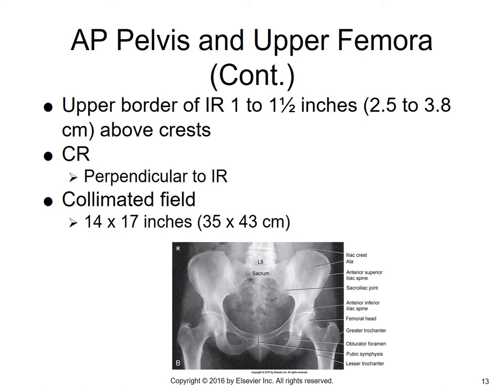If we take a look at the radiograph, we can see — identification-wise — we've got the iliac crest, the ala or wing of the ilium, ASIS, the SI joint, the AIIS, the femoral head, the greater trochanter, the obturator foramen, pubic symphysis, and the lesser trochanter.